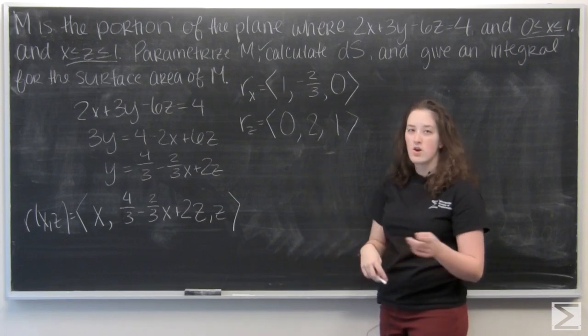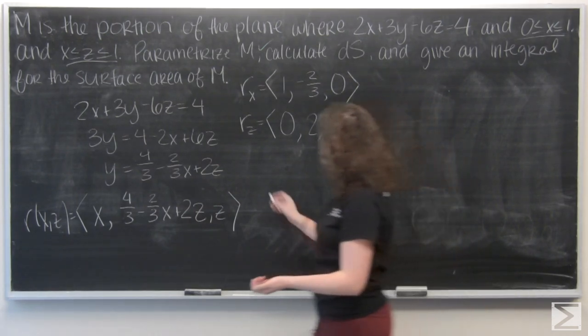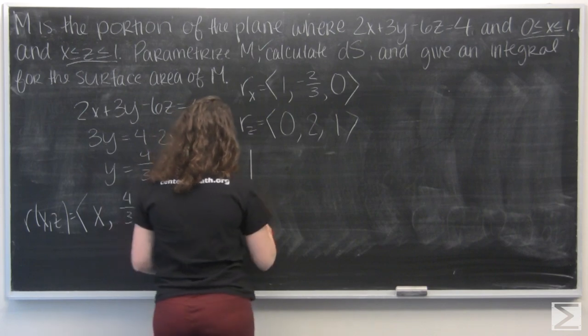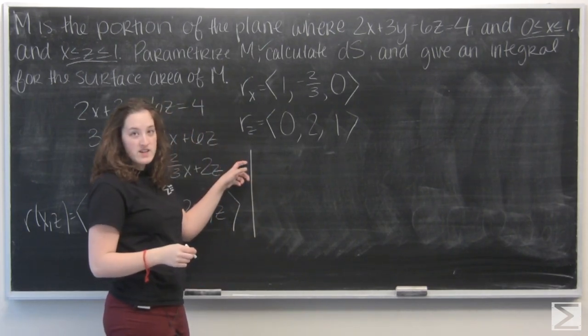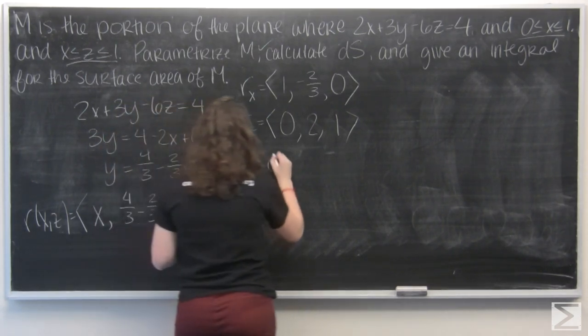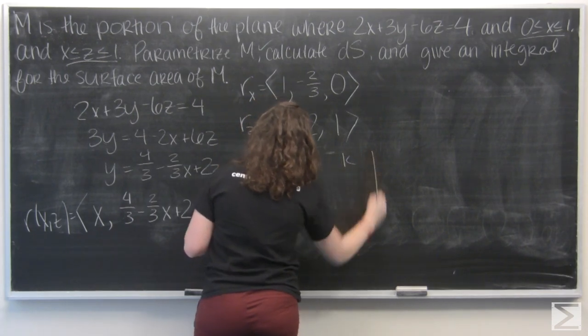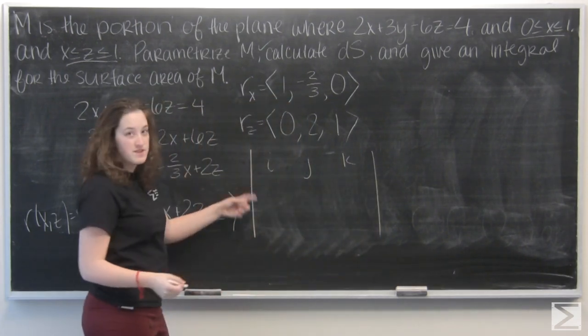Now I want to find the cross product of these two vectors. I'm going to use a matrix. So i, j, and k in the first row. And then rx and rz.